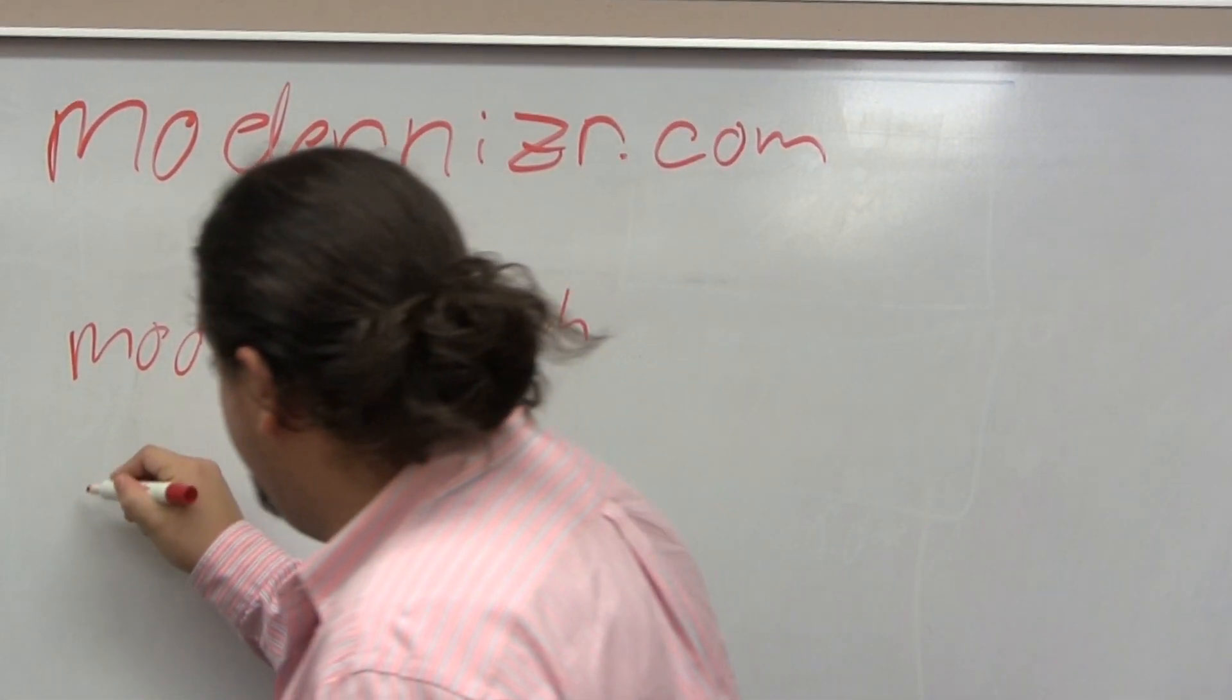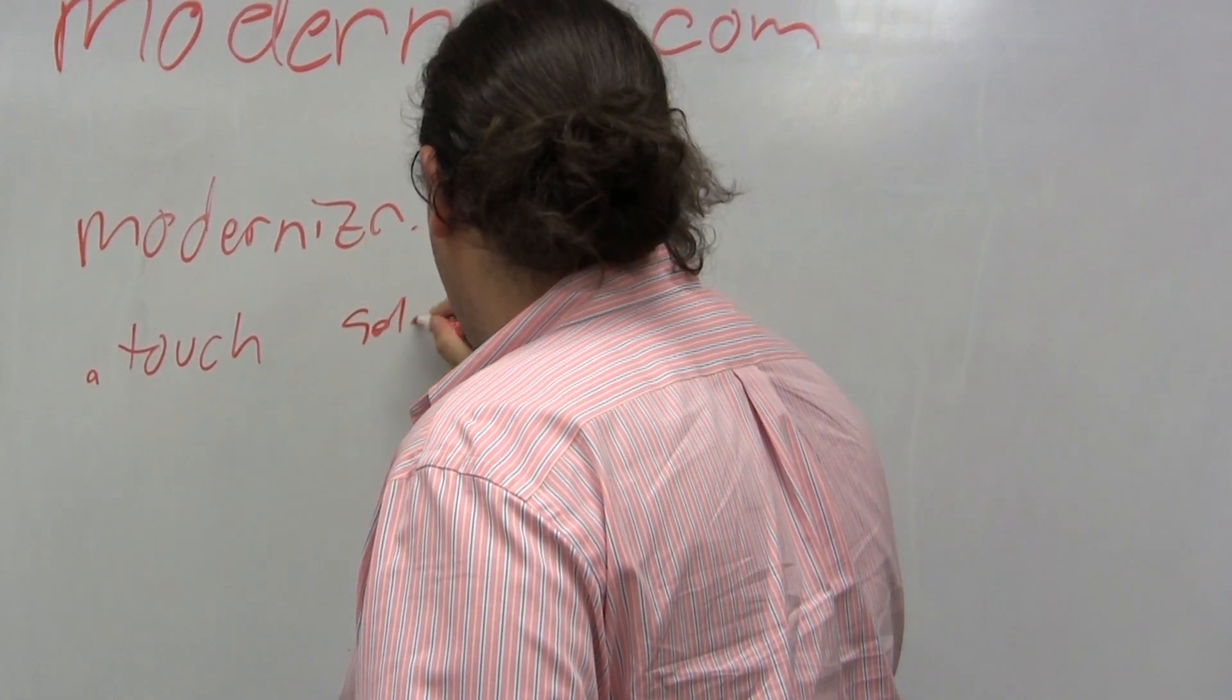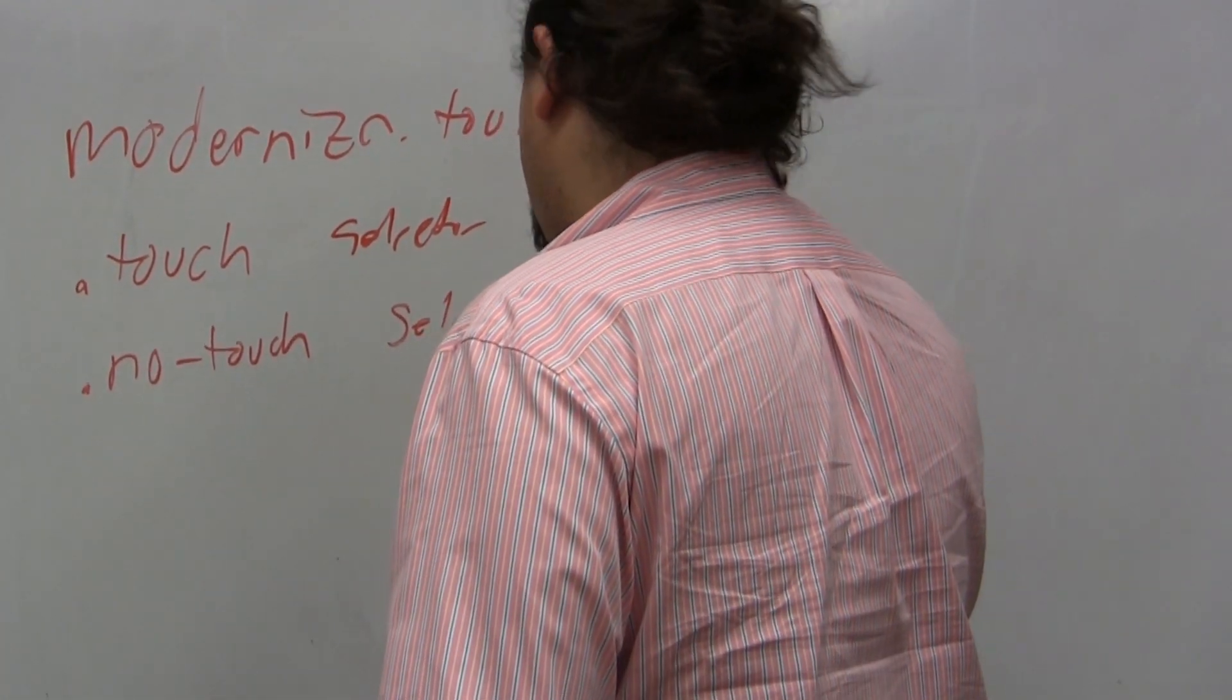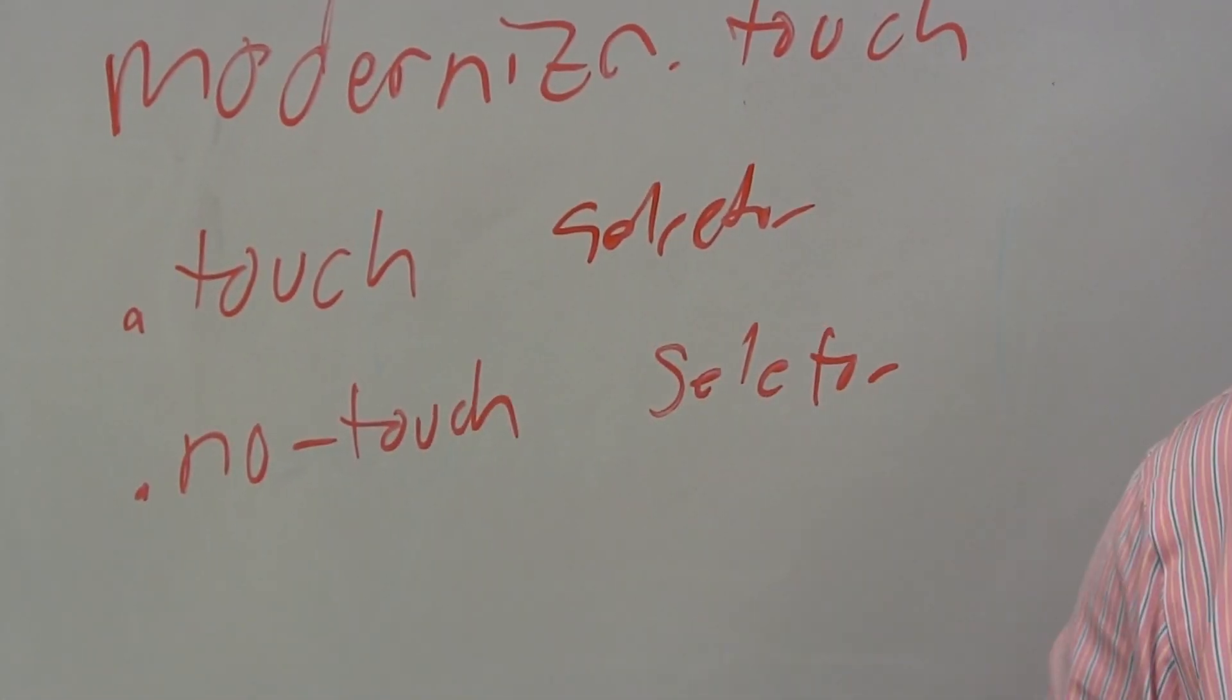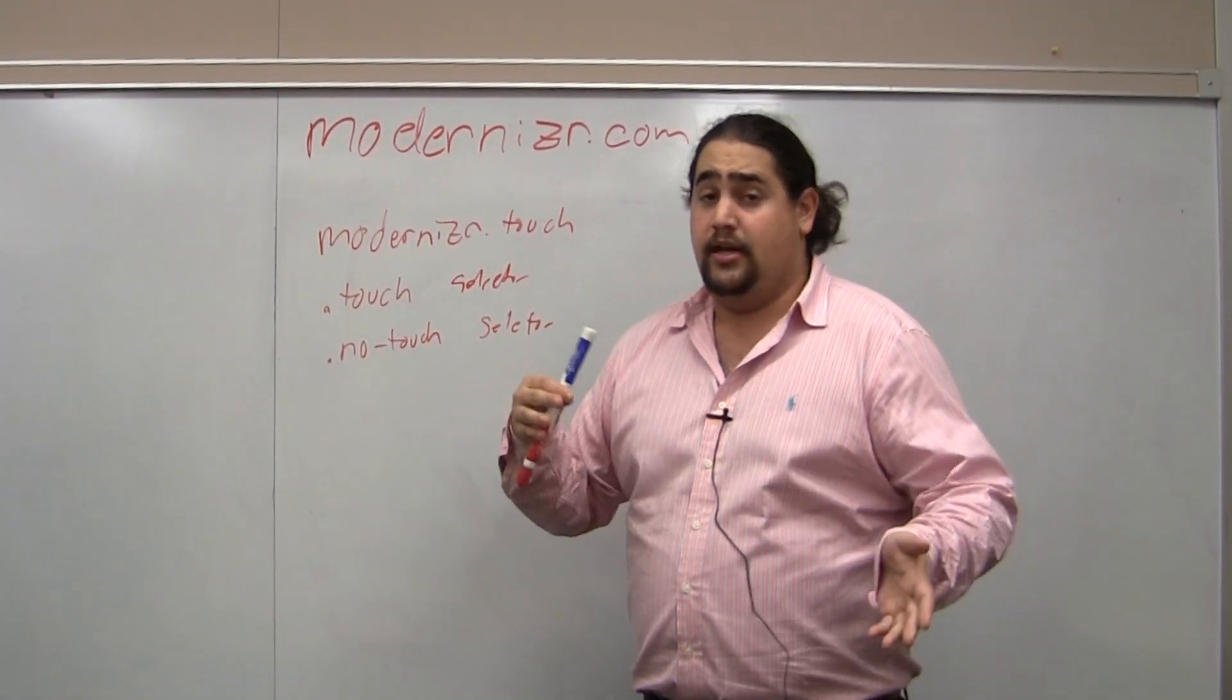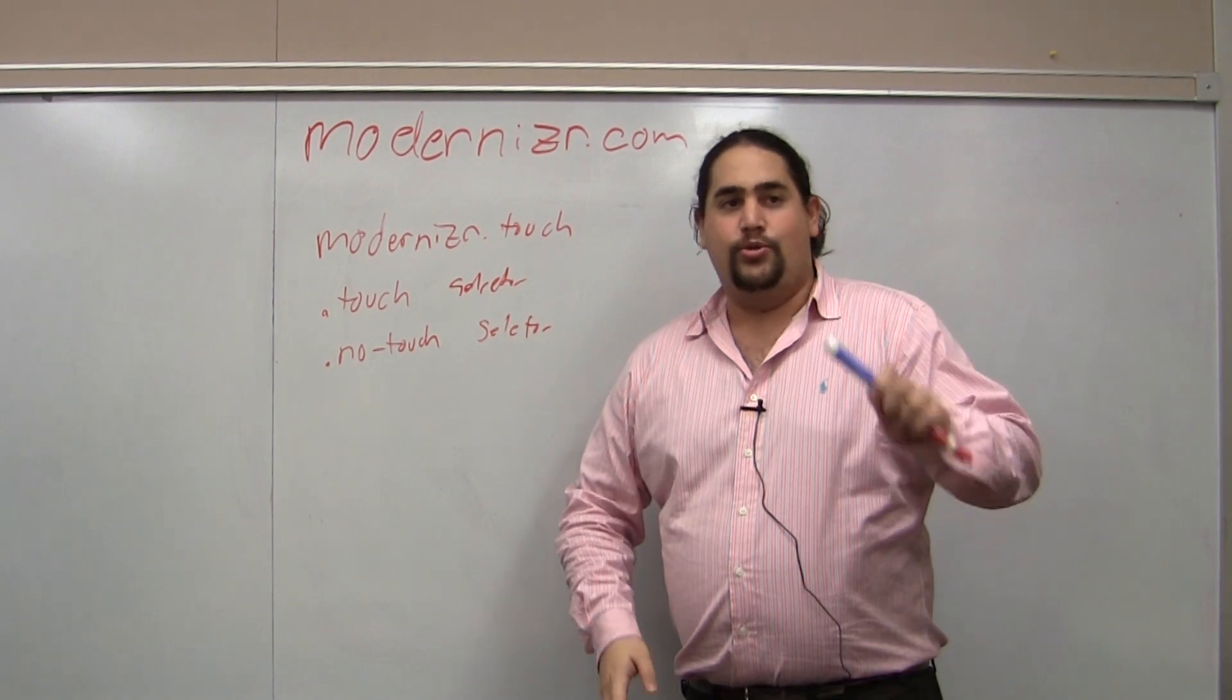So you could, in your CSS, write .touch, T-O-U-C-H, I can spell, and then selector. Or .no-touch selector. And be able to, through the use of Modernizr and a little bit of old-school parent selecting in CSS, be able to target your CSS to touch and no-touch. And that way you can target experiences to features that are available as opposed to user agents.